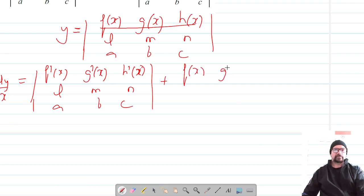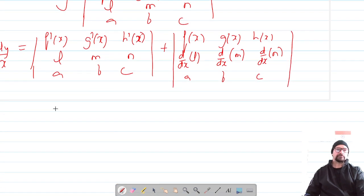Plus, this is now f(x) g(x) h(x) in the first row, differentiation of l, differentiation of m, differentiation of n, and this is a b c.